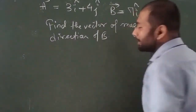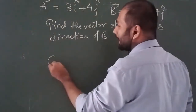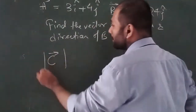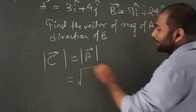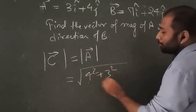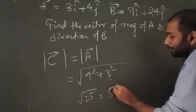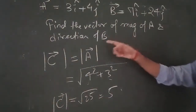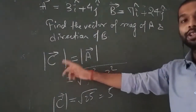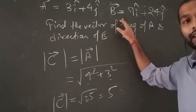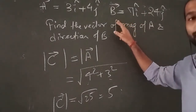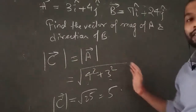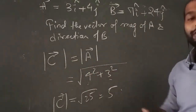Let us call the third vector C. The magnitude of C should equal the magnitude of A. So |C| = √(4² + 3²) = √(16+9) = √25 = 5. The direction of C should be along the direction of B, which is given by the unit vector of B: b̂ = B / |B|.